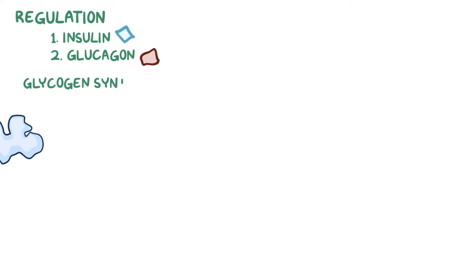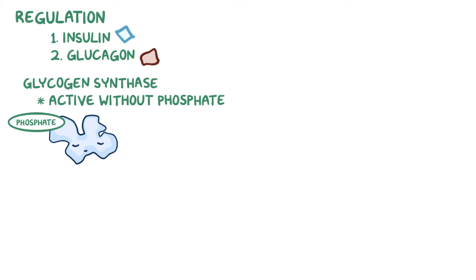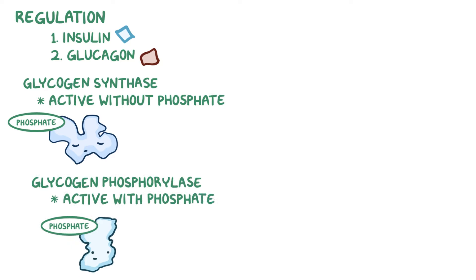Glycogen metabolism is primarily regulated by two pancreatic hormones, insulin and glucagon. Now a general rule of thumb is that glycogen synthase is active when it doesn't have a phosphate, whereas glycogen phosphorylase is active when it does have a phosphate attached to it.